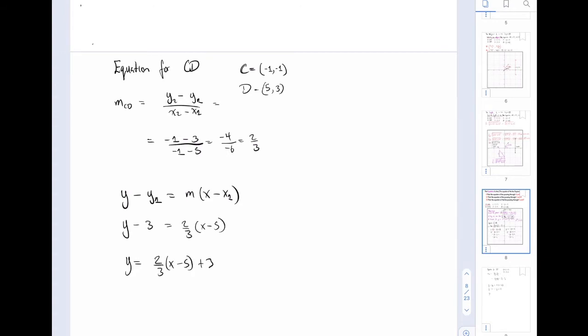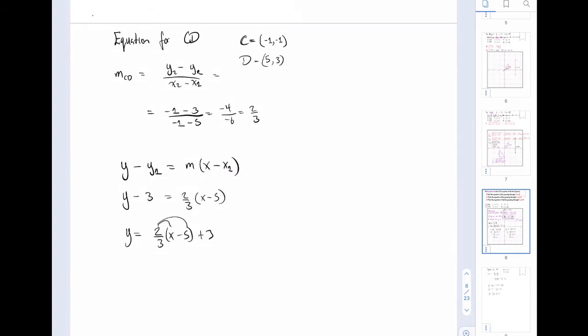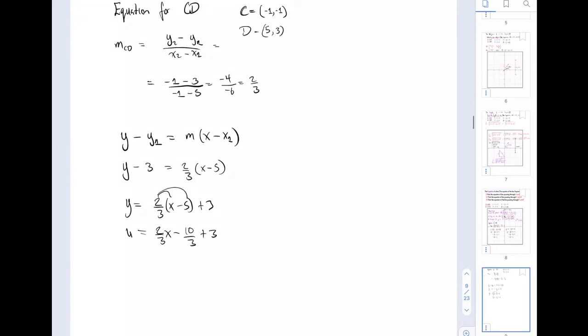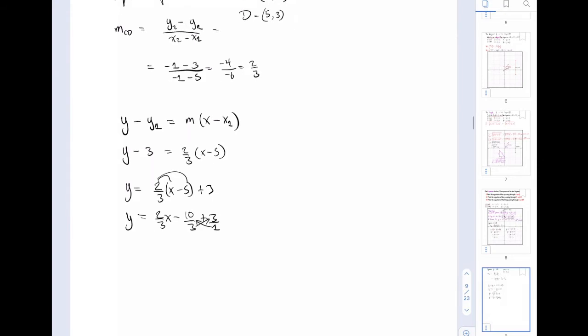I now distribute this two-thirds into that, and I get y equals two-thirds x minus 10 over 3 plus 3. To simplify this, I divide and get y equals two-thirds x minus 10 plus 9 over 3, so y equals two-thirds x minus 1 over 3.